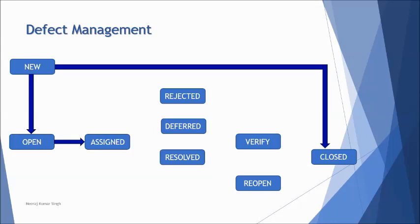Once the developer understands the defect, they have a few options. First, they may find the defect genuine, fix it, and mark it as 'Resolved.' Second, if the defect cannot be fixed right now and requires more information or time, they mark it as 'Deferred,' meaning it will be fixed in a later version. Third, if the defect is not reproducible in the development environment, it can be 'Rejected' by the developer.